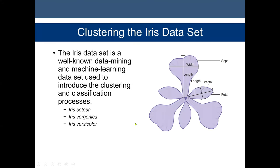An example is clustering the Iris dataset. The Iris dataset is a well-known data mining and machine learning dataset used to introduce the clustering and classification process. In the Iris dataset, we have attributes: sepal length and width, and petal length and width. Based on these values, we can classify whether the flower is Iris setosa, Iris virginica, or Iris versicolor.